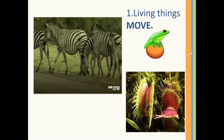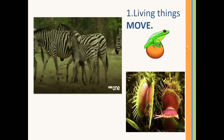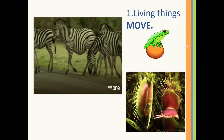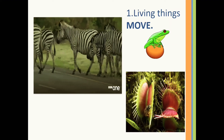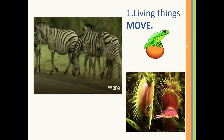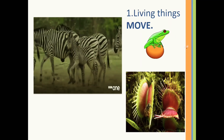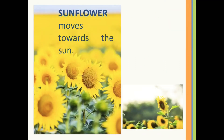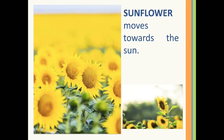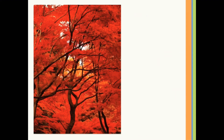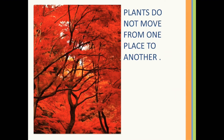Have you seen plants moving from one place to another? Well, plants do not move from one place to another. Yet some plants, like the Venus flytrap, can close its flap when an insect comes and sits on it. Likewise, the sunflower moves towards the sun to get more light, and the touch-me-not plant closes its leaf when touched. So plants can move some of their parts, even if they can't move from place to place.